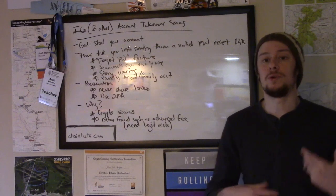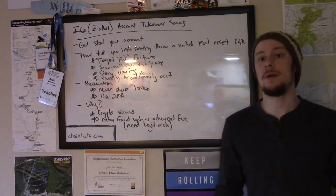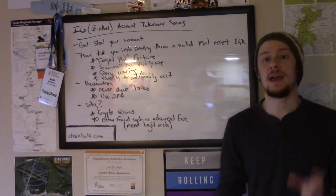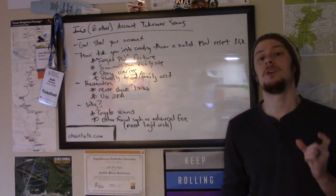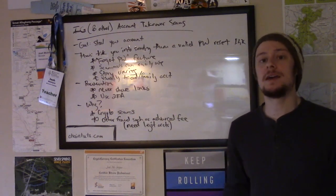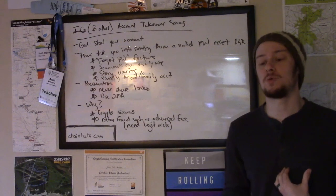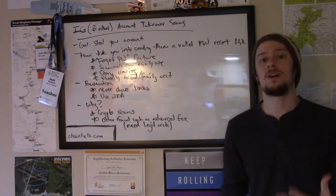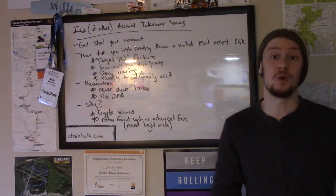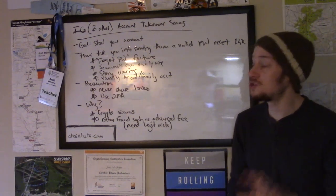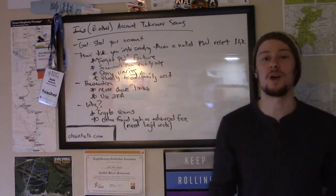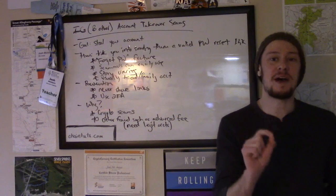For example, you type in your username, you say I forgot my password, and you get that link. That link is a secret link that can be used to reset the password access to your account. The idea is if you forget your password, Instagram has some way of verifying that you are the real you, because you have access to your phone number. So what scammers try to do is they use social engineering and some type of story to get you to give them that link.